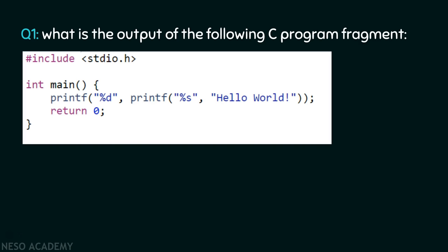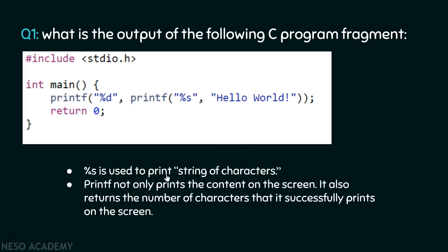What does this inner printf function do? Inside this printf function, I have provided the argument as %s. Now %s is used to print a string of characters onto the screen. Here, I have provided the string "hello world". So if we want to print "hello world" on the screen, we use %s. This printf function will print "hello world" on the screen.